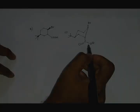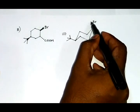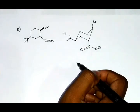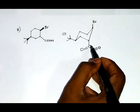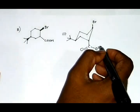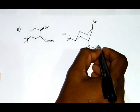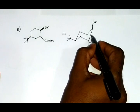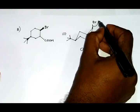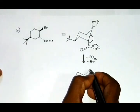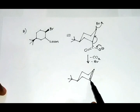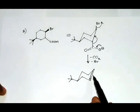In this case, the bromine group, which is the leaving group, and the carboxylic group are anti-periplanar to each other. So here the carboxylic group itself will be the leaving group. The lone pair of electrons from oxygen will fall here, this bond will break and fall here, and the bromine group will leave.